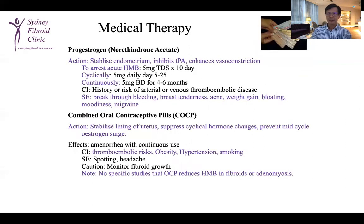Progestogen agents are commonly used to treat heavy menstrual bleeding. A high dose can arrest acute heavy menstrual bleeding, and it can also be used cyclically or continuously. Side effects include breakthrough bleeding, breast tenderness, acne, weight gain, bloating, moodiness, and migraine. Combined oral contraceptive pills are commonly used by GPs as first-line treatment for heavy menstrual bleeding and period pain. However, there are no specific studies showing that OCP reduces heavy menstrual bleeding in fibroids or adenomyosis.